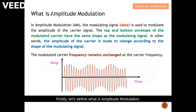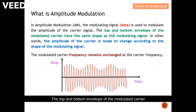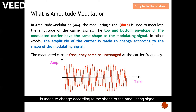Let's define what is amplitude modulation. In amplitude modulation, also known as AM, the modulating signal — which is the information that we want to send to the recipient — is used to modulate the amplitude of the carrier signal. The top and bottom envelope of the modulated carrier have the same shape as the modulating signal. In other words, the amplitude of the carrier is meant to change according to the shape of the modulating signal.